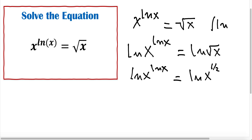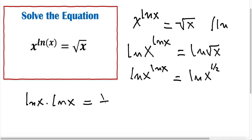We write x to the power of 1 over 2. Now, according to the rules of exponents, this exponent can become a multiplier, so ln x times ln x is equal to 1 and a half ln x.